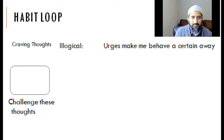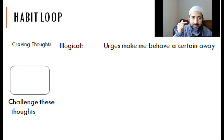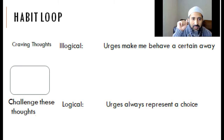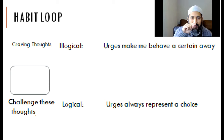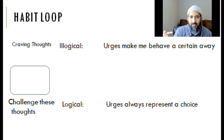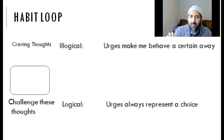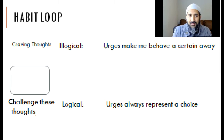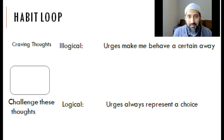The second irrational thought is: 'Urges make me behave in a certain way — urges are completely connected to my behavior.' The logical thought is: urges and cravings always represent a choice. I always have a choice. Sometimes it feels like a very quick thing — urge, use, urge, use. The logical thing to bind this down is to remind yourself: I always have a choice. I can stay here, persist with this urge and it'll eventually go away, or I can give in. Whatever I do, that's my choice — I'm not the victim of that choice, I'm volunteering for that choice.